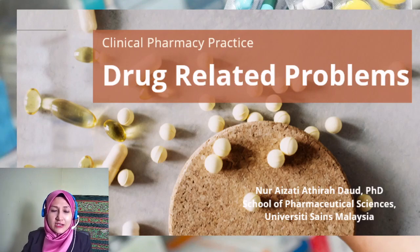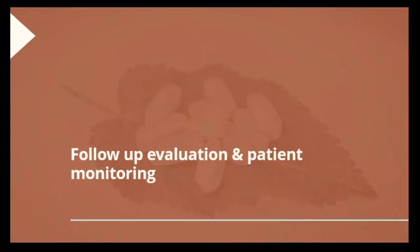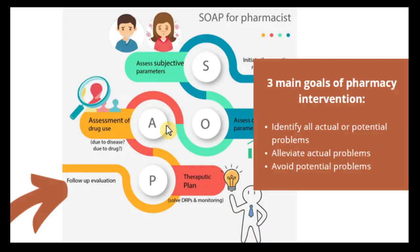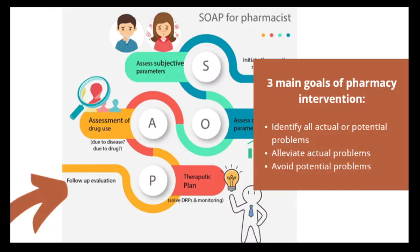Hi everyone, this is the third part of the module. Coming back to the SOAP plan for pharmacists, we have done the assessment of drug use based on the questions that we ask ourselves to identify any drug-related problems or pharmaceutical care issues (DRPs), and to avoid any potential problems.